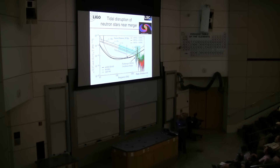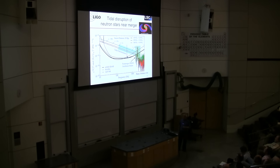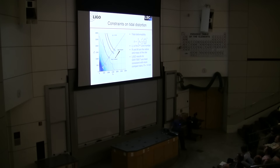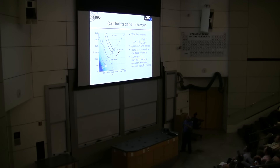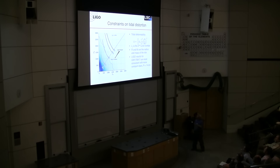That barely measurable hint allows us to limit the tidal deformability of these stars. Stiffer equations of state correspond to bigger, less compact stars; softer ones to very compact stars. What we see is that we're consistent with soft or intermediate equations of state, corresponding to neutron stars with radii less than 13 or 14 kilometers. We're starting to contribute to learning about the nuclear equation of state.